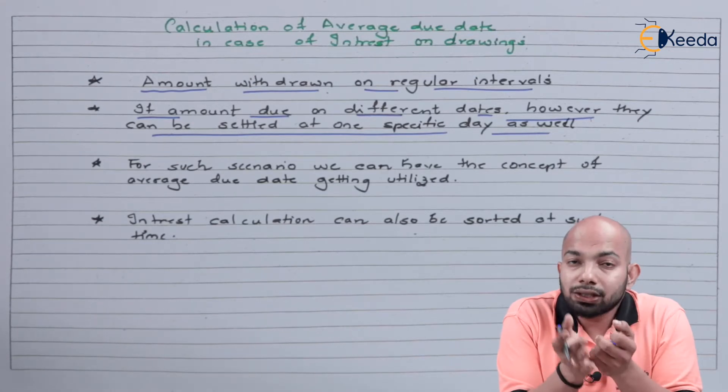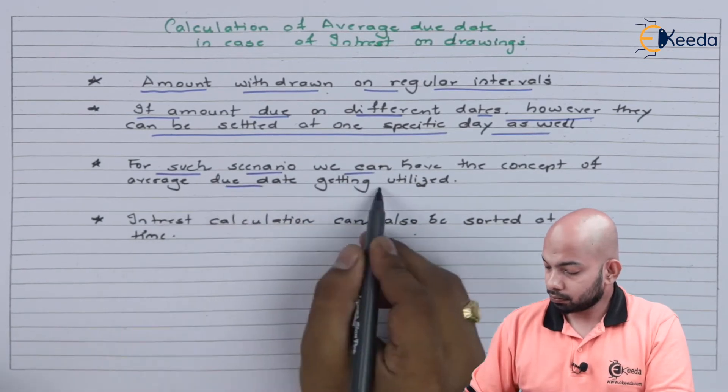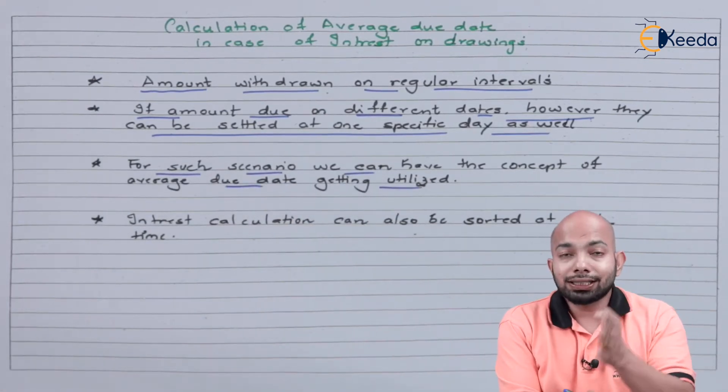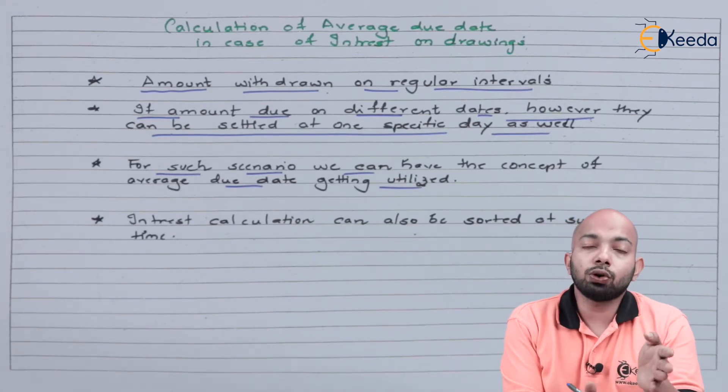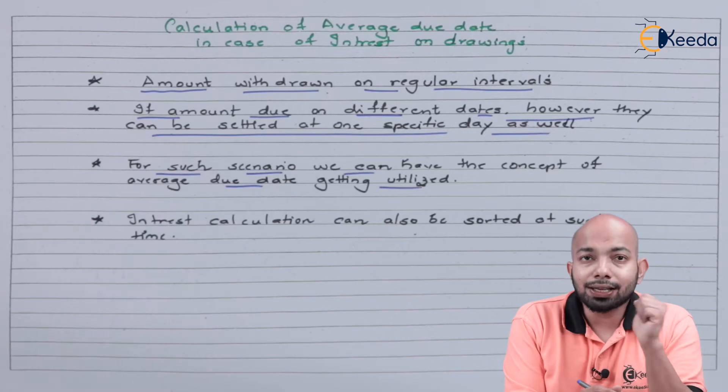Now to assess this, we have average due date calculation that can be utilized here. The interest calculation on such average due date system can also be done using this specific system that we have been using for the past three methods.